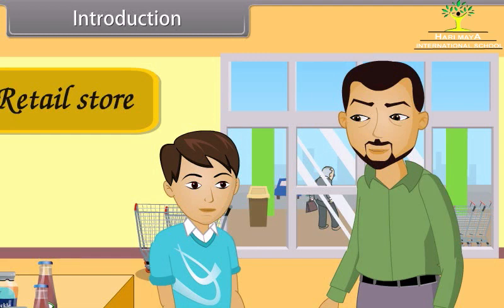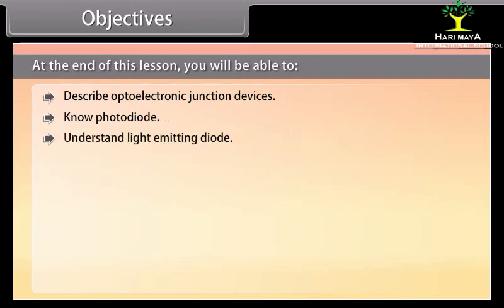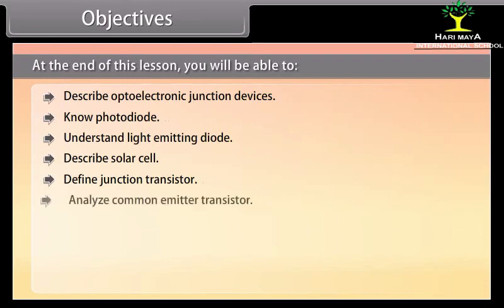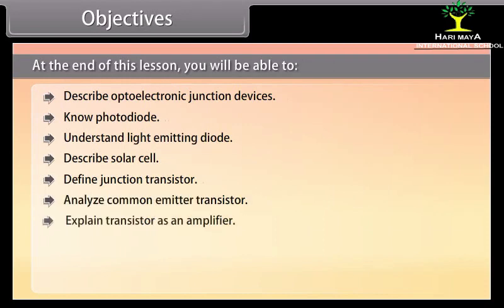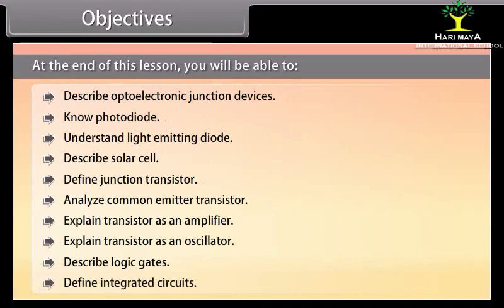Students, today we will study more about semiconductor electronics. Objectives: Describe light emitting diode, describe solar cell, define junction transistor, analyze common emitter transistor, explain transistor as an amplifier, explain transistor as an oscillator, describe logic gates, and define integrated circuits.